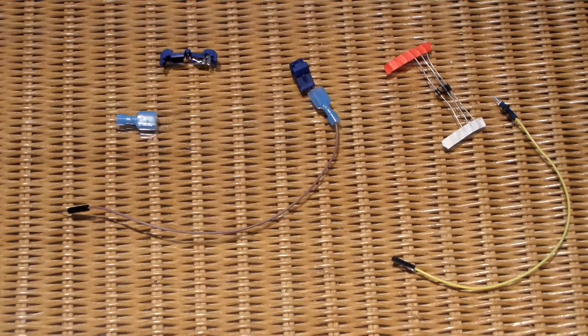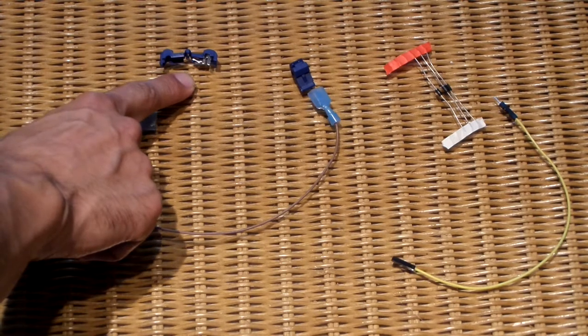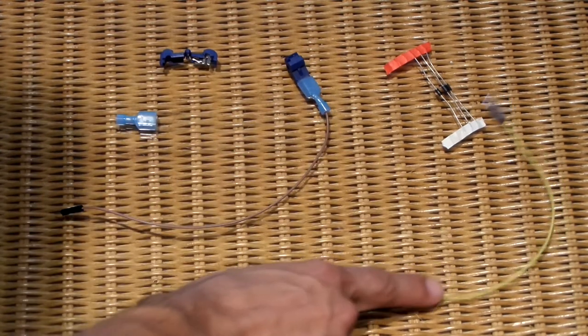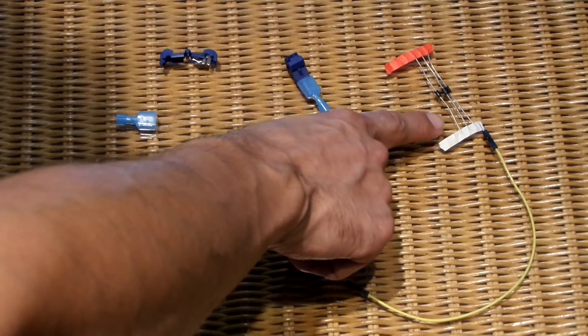To connect to ground and signal wires I'm gonna use these T-junction connectors. They're designed to pierce the cable and then another connector slides over them. On the signal wires I'm also gonna have to solder some diodes.